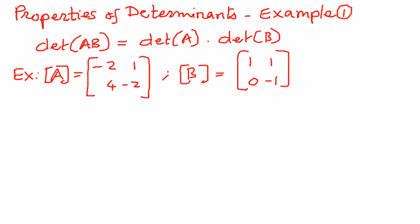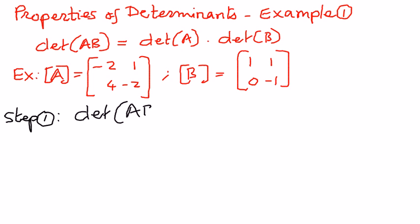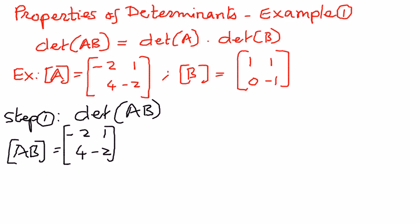Step 1: We will first find the determinant of AB. To do that, we want to find the product of matrix A times B. We take matrix A — negative 2, 1, 4, negative 2 — and then multiply that by matrix B — 1, 1, 0, negative 1.